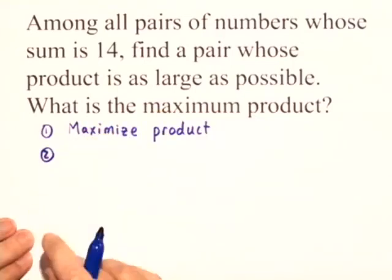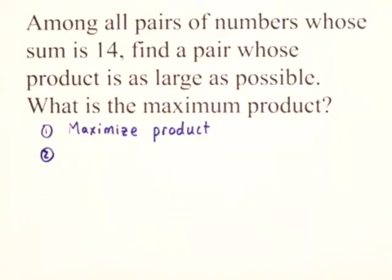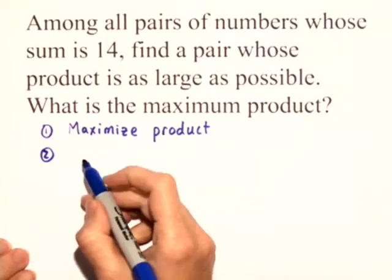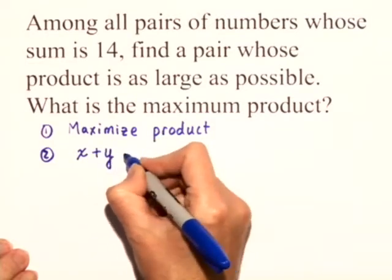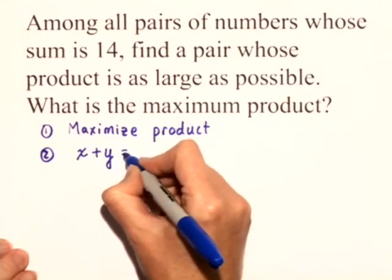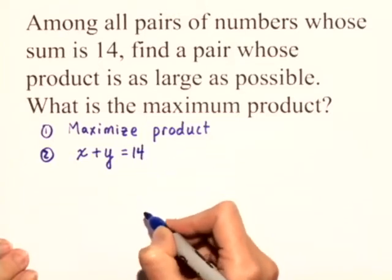In step 2, we want to express the product as a function of just one variable. So let's use our information to do that. We're looking for a pair of numbers whose sum is 14. So we could say that x is the first number plus y is the second number. That's the sum. We want that sum to be 14.